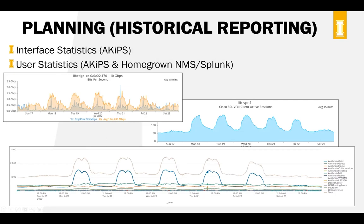Here are graphs I look at at least once a week — I look for the trends. Here's our main commodity Internet link. You can see our daily traffic pattern — it has that sine-wave kind of look as users are awake and on campus, traffic goes up and comes down, with some spikes. ACIPs will also track VPN or AnyConnect VPN client usage, and you can see that change during business hours each day.